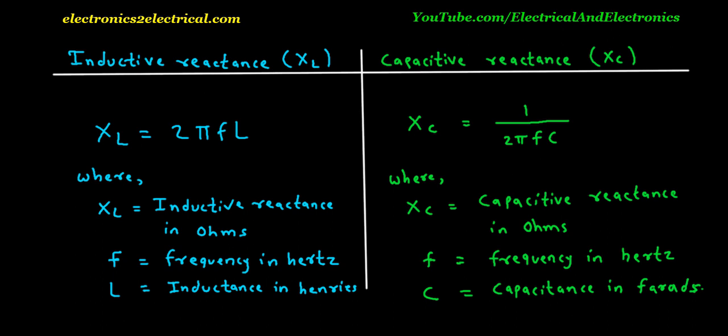Inductors and capacitors have opposite frequency characteristics. Inductive reactance XL increases with increase in frequency, and capacitive reactance XC decreases with decrease in frequency. The formula for inductive reactance XL is 2 pi F L, where XL is inductive reactance in ohms, F is the frequency in hertz, and L is inductance in henrys. Here, the inductive reactance XL is directly proportional to frequency F.